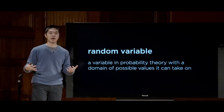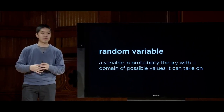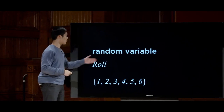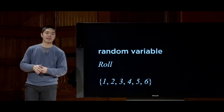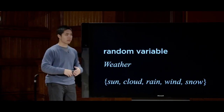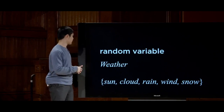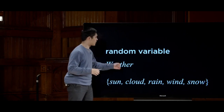Sometimes we don't just care about a Boolean event — did this happen or not. Sometimes we want to represent variable values in a probability space, where a variable might take on multiple different possible values. In probability theory, we call such a variable a random variable — it has some domain of values it can take on. For example, the random variable 'roll' might have domain {1, 2, 3, 4, 5, 6}. Or a random variable 'weather' might take values like sun, cloudy, rainy, windy, or snowy, each with different probabilities.